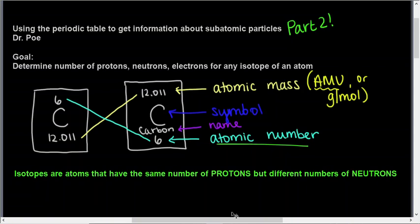This is part 2 on subatomic particles and using the periodic table to figure out protons, neutrons, and electrons, focusing on the term isotope.